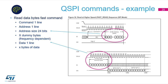The next important command is the read operation. Usually memories offer more than one read operation. In this picture you can see the one-line read using command 0x0B. It uses four phases: 8-bit command, 24-bit address, dummy cycles for reading, and data. Dummy cycles are frequency-dependent and ensure enough turnaround time for the memory.